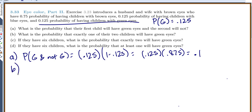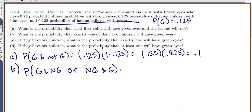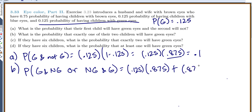For part B, what's the probability that exactly one of the two children will have green eyes? Exactly one means you can have green and not green, or not green and then green for the second child. You list out all combinations to get exactly one with green eyes. So green and not green is 0.125 times 0.875, plus not green and green which is 0.875 times 0.125.